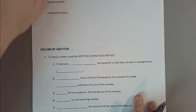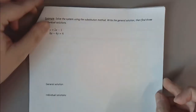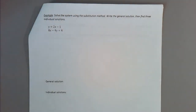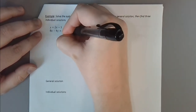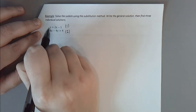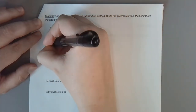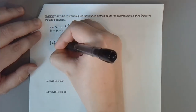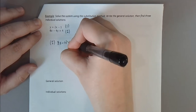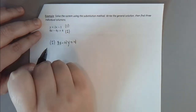Let's look at an example. We want to solve using substitution, write the general solution, and then find three individual solutions. Notice in equation one, y is already isolated. So we can substitute directly into equation two, replacing y with 2x minus 1. Equation two becomes 8x minus 4 times the quantity 2x minus 1 equals 4.